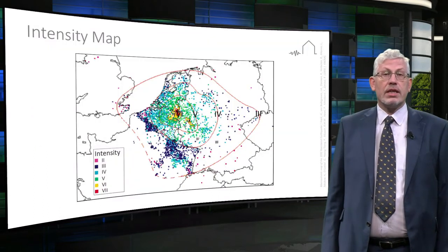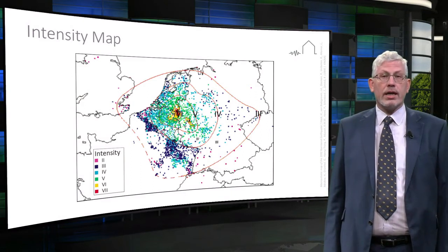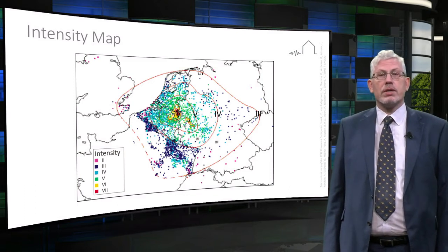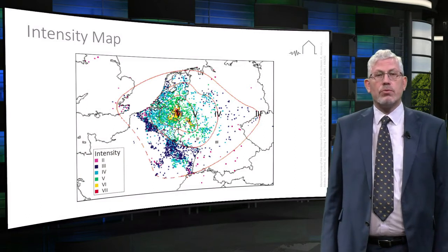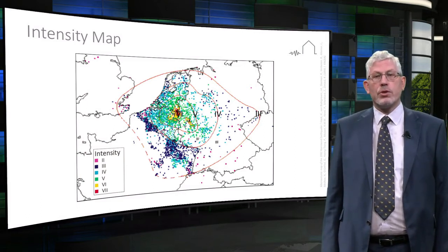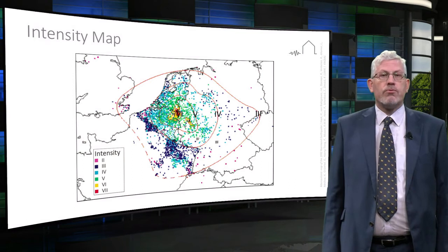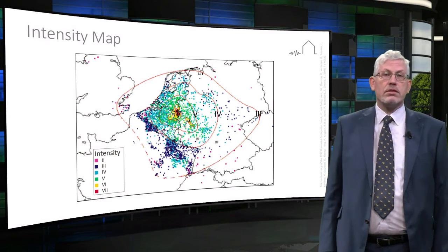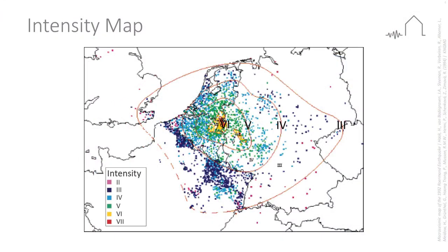There are different intensity scales: the Modified Mercalli (MM), Medvedev-Sponheuer-Karnik (MSK) and the European Macroseismic Scale (EMS), to name but three. The intensity is a number written as a Roman numeral, normally on a 12-point scale, and provides a qualitative measure of the earthquake size. Following an earthquake, maps of intensity measurements are often developed. An example from the 1992 Roermond earthquake is pictured, showing the area over which the earthquake was felt by all at intensity 4 and damage to buildings at intensity 6.